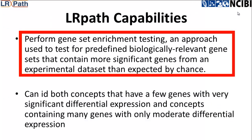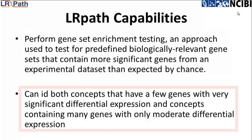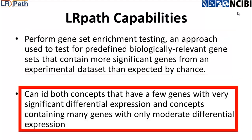Given a high-throughput data set with continuous significance values such as p-values, LRPath tests for gene-sets, which are termed concepts, that have significantly higher significance values than expected at random. LRPath can identify both concepts that have a few genes with very significant differential expression and concepts containing many genes with only moderate differential expression.